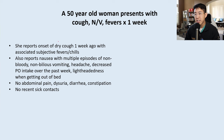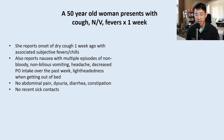A 50-year-old woman presents with cough, nausea, vomiting, and fevers for the past week. She reports the onset of a dry cough one week ago with associated subjective fevers and chills. She also reports nausea with multiple episodes of non-bloody, non-bilious vomiting, headache, decreased PO intake over the past week, and lightheadedness when getting out of bed. She had no abdominal pain, dysuria, diarrhea, or constipation, and no recent sick contacts.